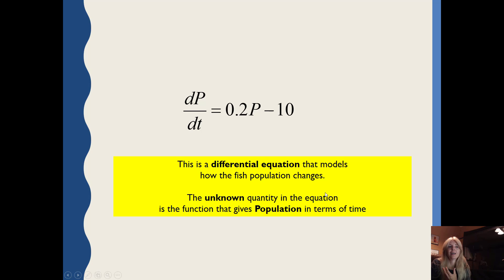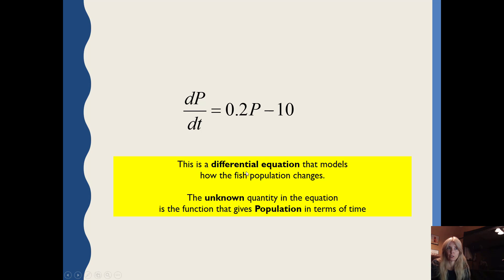The big key difference here is that my unknown quantity is actually a function — the population in terms of time, p of t.